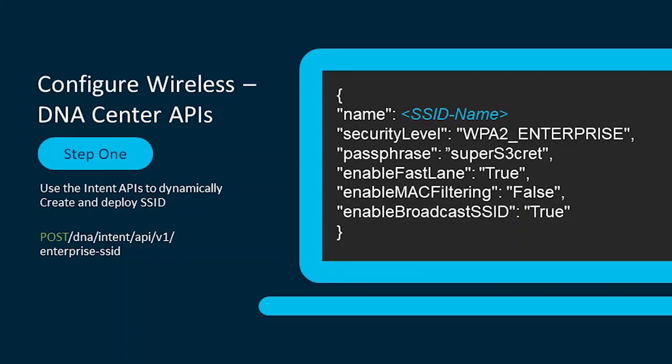Templates let you create a template with specified ports and protocols defined, then attach it to multiple devices. We'll create a template for our store and assign it to all the routers. For DNA Center we'll use the enterprise SSID — one of the new intent APIs — passing in configuration information like the store name as the SSID name, security level, passphrase, and features like Fast Lane.